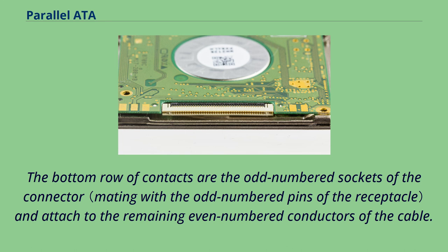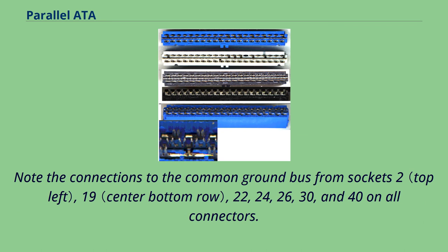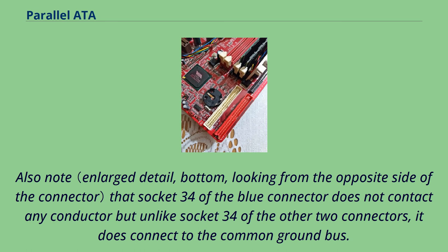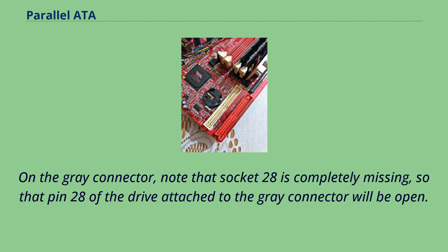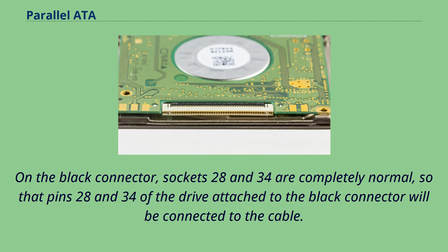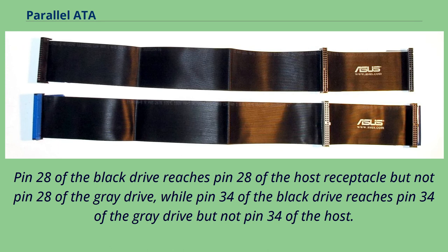The top row of contacts are the even-numbered sockets of the connector and attached to every other even-numbered conductor of the cable. The bottom row of contacts are the odd-numbered sockets of the connector and attached to the remaining even-numbered conductors of the cable. Note the connections to the common ground bus from sockets 2, 19, 22, 24, 26, 30, and 40 on all connectors. Also note that socket 34 of the blue connector does not contact any conductor but, unlike socket 34 of the other two connectors, it does connect to the common ground bus. On the gray connector, socket 28 is completely missing, so that pin 28 of the drive attached to the gray connector will be open. On the black connector, sockets 28 and 34 are completely normal. Pin 28 of the black drive reaches pin 28 of the host receptacle but not pin 28 of the gray drive, while pin 34 of the black drive reaches pin 34 of the gray drive but not pin 34 of the host; instead, pin 34 of the host is grounded.